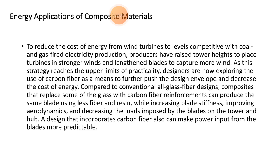Carbon fibers, fiberglass, epoxy lining, gel coating, and core materials are used in wind mill blades. To reduce the cost of energy from wind turbines to a level competitive with coal and gas-fired electricity production, producers have raised tower heights to place turbines in stronger winds and lengthened blades to capture more wind.